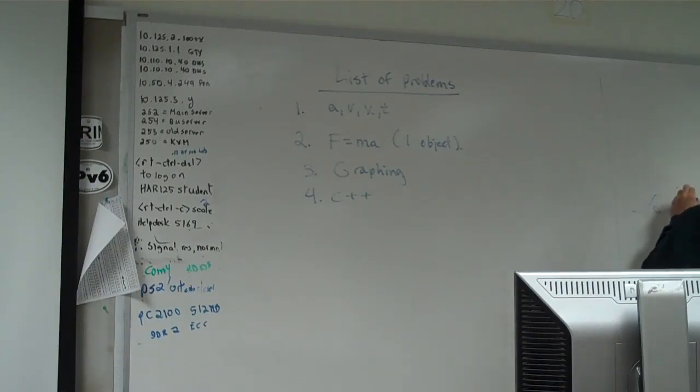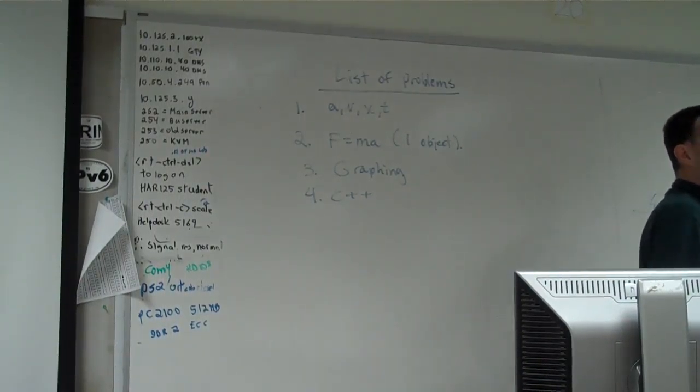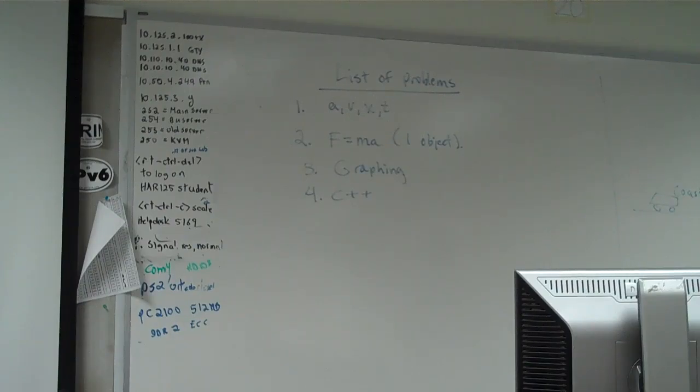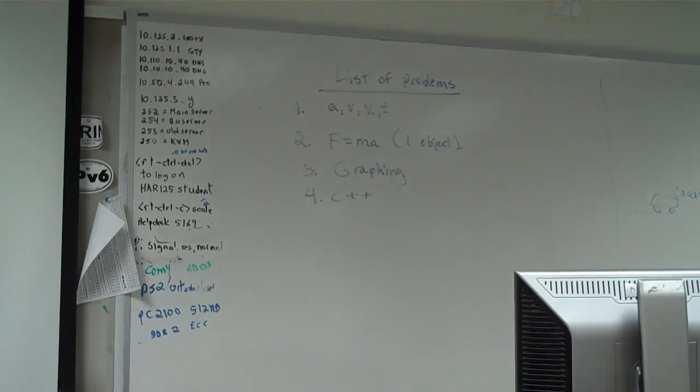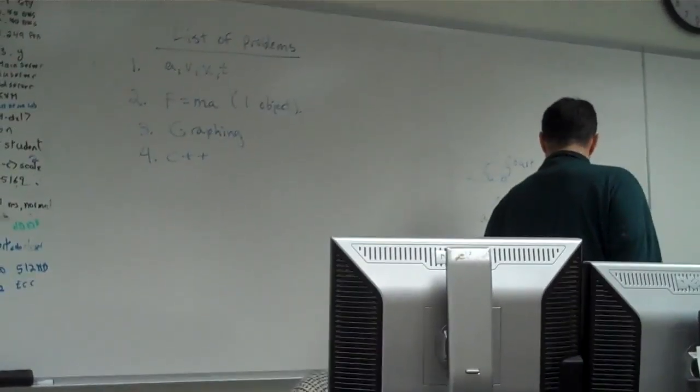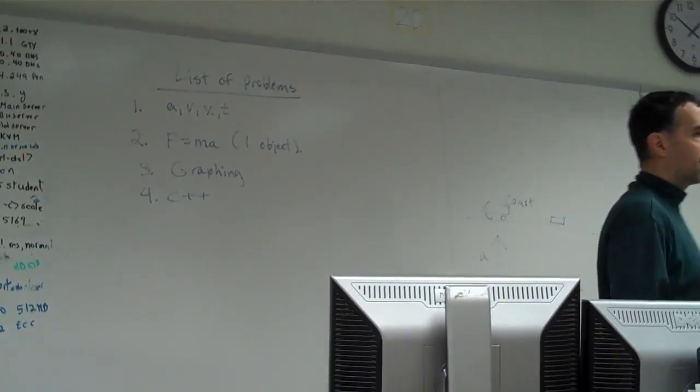So the car, up until it hits the log, is coasting. It hits the log, and then it's going to slow down due to the friction of the log against the road. So for this situation, can we graph acceleration versus time, velocity versus time, and position versus time for the car?